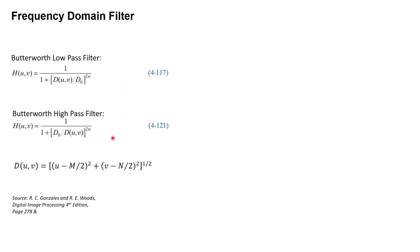In this tutorial, our filter transfer function H is the Butterworth filter. There are two types of Butterworth filter: the Butterworth low pass filter and the Butterworth high pass filter. Similarly to the ideal filter and Gaussian filter, the Butterworth filter also has parameters D and D0, where D is the radius from the center and D0 is the cutoff frequency. The Butterworth filter has one more parameter, N, which is the order of the filter. You can check the textbook to read more about the Butterworth filter.